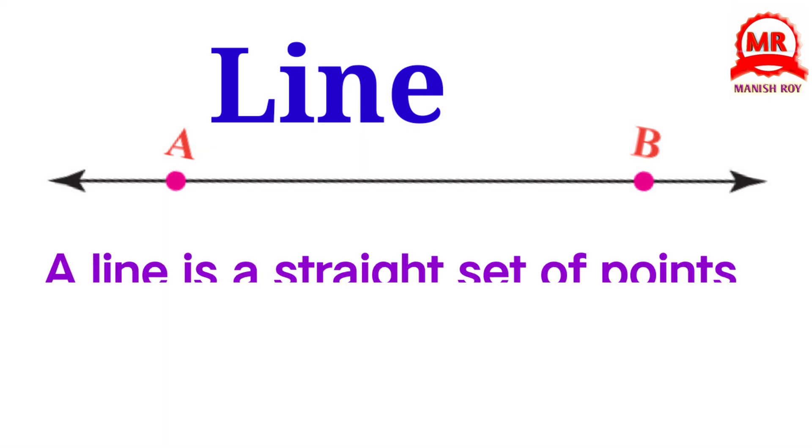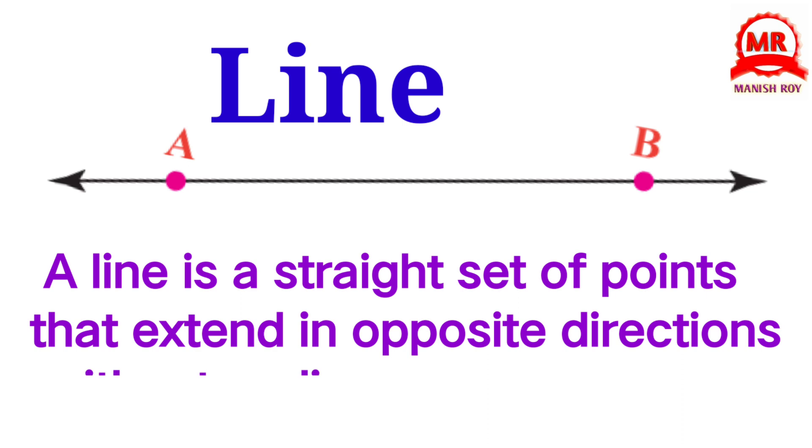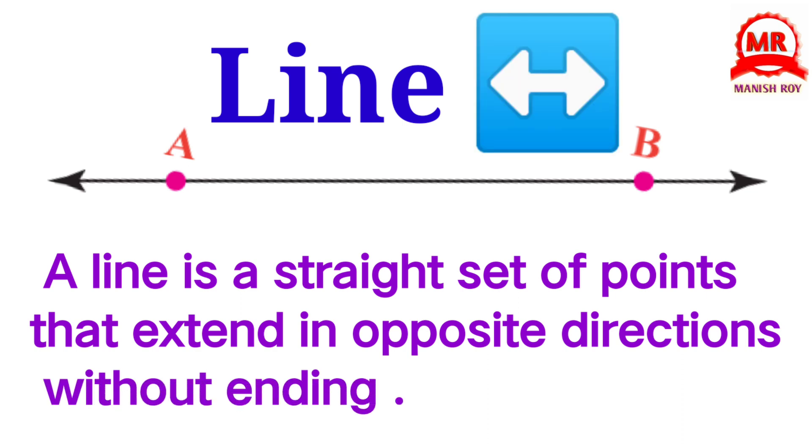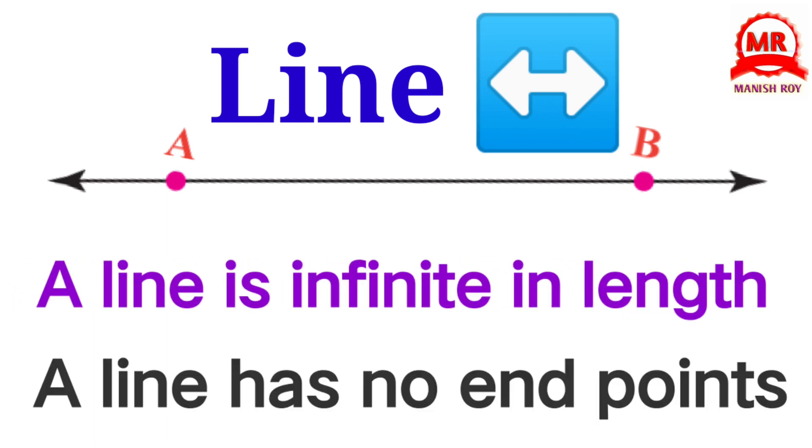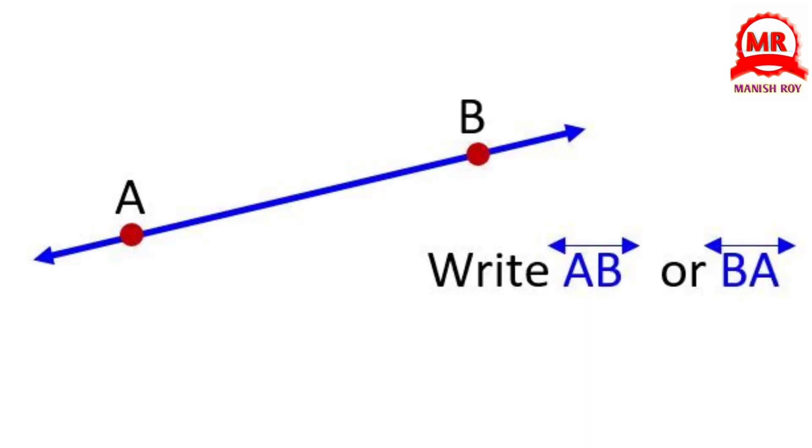Line. A line is a straight set of points that extend in opposite directions without ending. A line is infinite in length. A line has no endpoints. It is written as Line AB or Line BA.